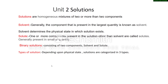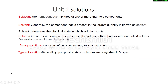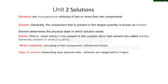Hello guys, once again welcome to chemistry classes. Today we'll discuss the next chapter of class 12, that is solutions. First we will discuss some common terms. A solution is a homogeneous mixture of two or more than two components — a definition we have discussed in lower classes.